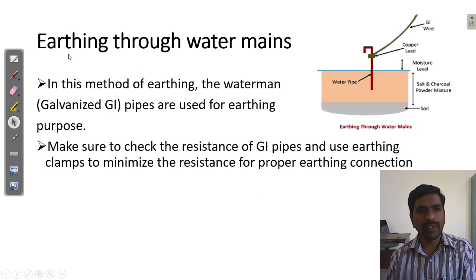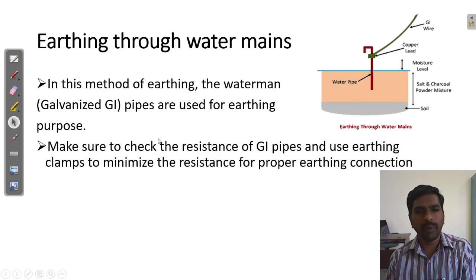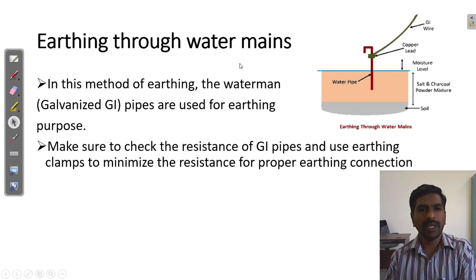Another method of earthing is called earthing through water mains. They use water — there is a moisture level — and copper lead. Galvanized wire is connected to a water pipe, along with salt, charcoal, and soil. In this method of earthing, galvanized GI pipes are used for earthing purpose. During selection of the galvanized pipe and galvanized wire, make sure that the resistance of this earthing is low. The resistance of the galvanized pipe should be low. This is called earthing through water mains.